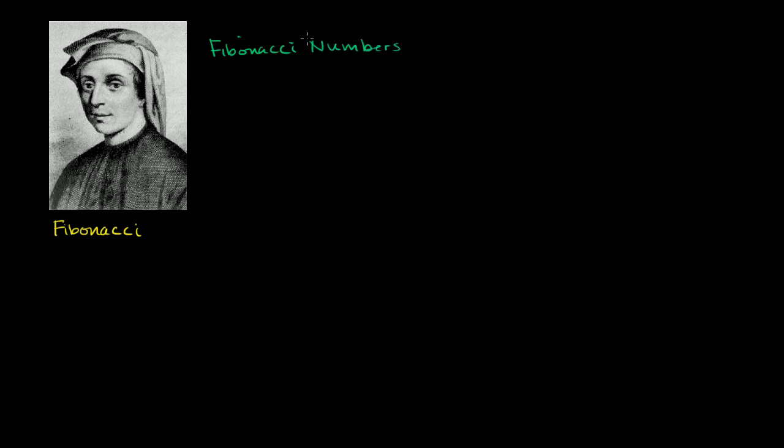And he didn't discover them. They were actually discovered several centuries before him in India, but he popularized them, especially in the West. And the Fibonacci numbers are super simple. The first two are defined as 0 and 1, and every number after that is the sum of the previous two.